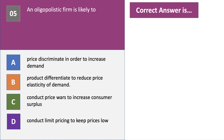An oligopolistic firm is most likely to B: price products differentiated to reduce the price elasticity of demand. A key feature of oligopoly is interdependent behaviour by firms. They engage in lots of non-price competition — branding, product differentiation, marketing — to try to differentiate one product from another, to increase consumer loyalty and thereby reduce the elasticity of demand, the sensitivity of consumers to price.